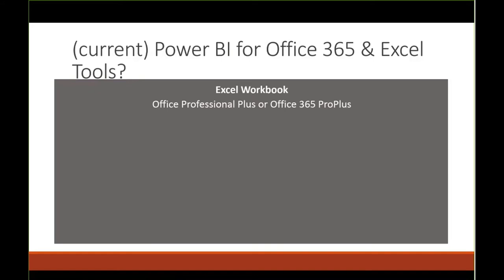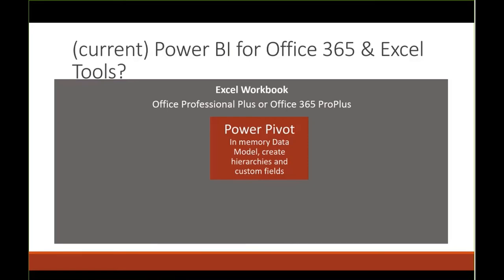Let's start with the current Power BI for Office 365 and the Excel on-premises tools. The first tool is PowerPivot, which has been around the longest. PowerPivot's main feature is that it creates an in-memory data model. Using this data model, Excel's pivot table feature can access hundreds of millions of rows of data with performance. It removes the constraints of Excel row and column limits, and lets you create hierarchies, customize fields and formulas, and link to multiple data sources on a single pivot table — something you can't do in Excel out of the box.